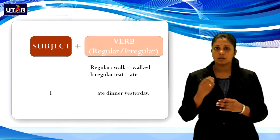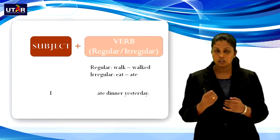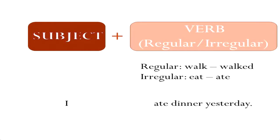For regular verbs, we add -ed to the verb. For instance, walk — you add -ed to it, and the past form becomes walked. For irregular verbs, the whole word changes. For instance, eat — in past form it is ate. So let's look at the example: I ate dinner yesterday. Here, I is the subject, ate is the past form of eat, and this sentence is in past tense.